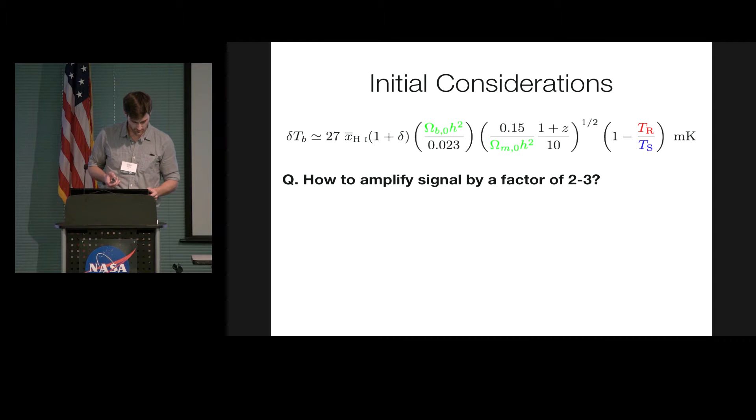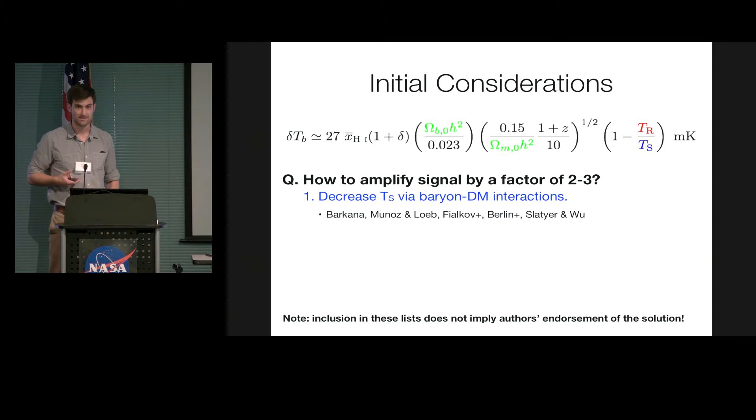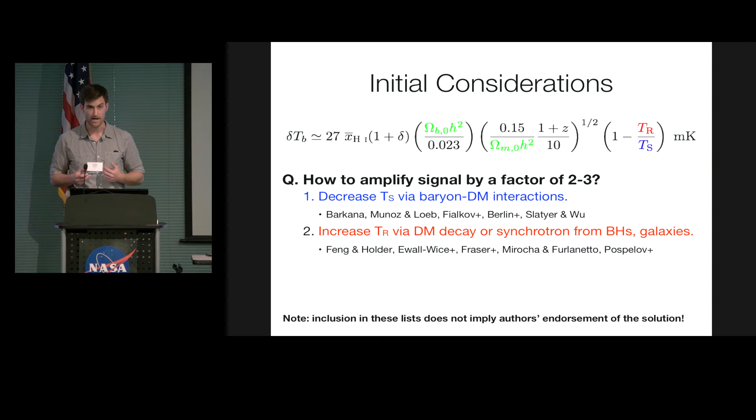The first thing you can look at is the spin temperature and say, are there ways I could make this smaller than we'd expect? And one answer is, if baryons and dark matter interact in some way, the baryons can use the dark matter as a heat sink of sorts, and transfer some of their energy to the dark matter while themselves cooling a little bit more. You could also be wrong about the backlight. Maybe it's not just the CMB. Maybe there's some exotic decaying particle in the early universe that kind of amplifies what we thought of as the backlight, which would bias your signal to larger amplitudes. Or you could screw around with these cosmological terms. That's a little trickier because you have to contend with pretty tight constraints on things like the microwave background itself.